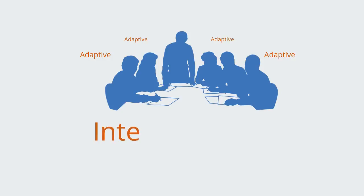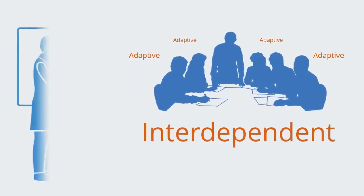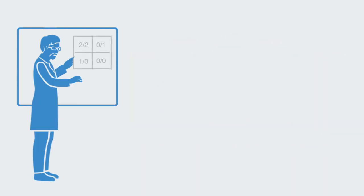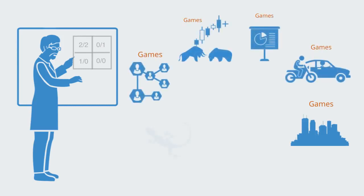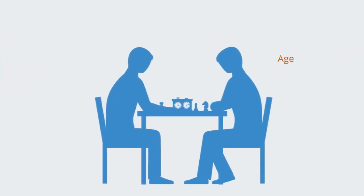It is these systems composed of adaptive agents that are interdependent that game theory tries to understand and model. A game is a system where adaptive agents are interdependent in affecting each other and the overall outcome. Game theory is the mathematical modeling of such systems. These adaptive systems are pervasive in our world, from cities and traffic to economies, financial markets, social networks, ecosystems, politics, and business.